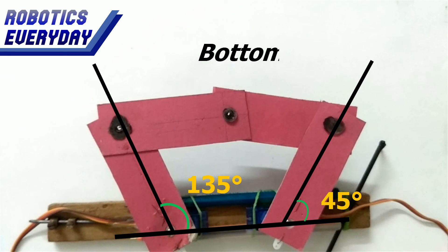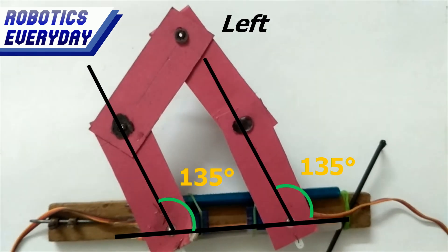When the rotor of the left is at 135 degrees and that of the right is at 45 degrees, then the bottom most point is achieved. When both the rotors are at 135 degrees, then the extreme left point is achieved.